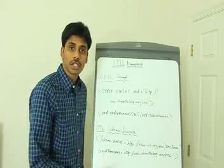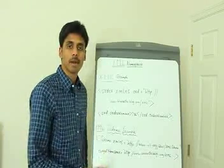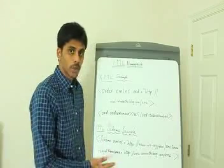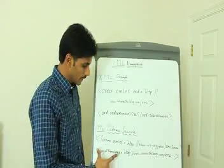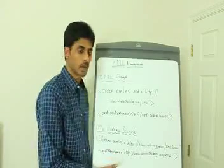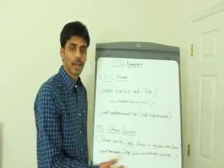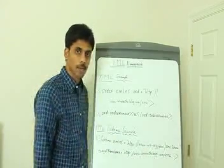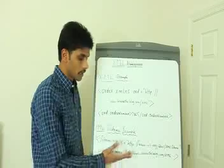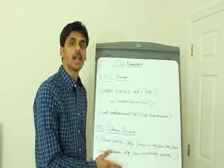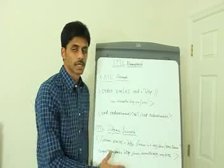If you remember from the previous session, every schema, XML schema document starts with the schema element. So within that root element of XML schema, we say target namespace. So what the target namespace for any XML document that's going to comply with this schema will be. So in my case, I'm saying it's baratsblog.com and any XML document that follows this XSD file will use this as their namespace.